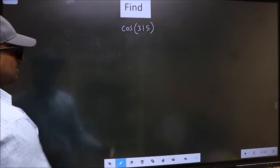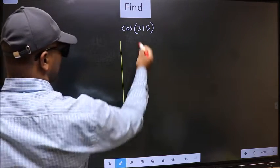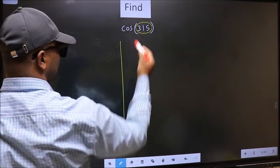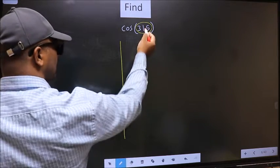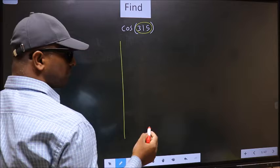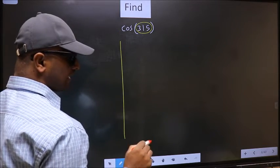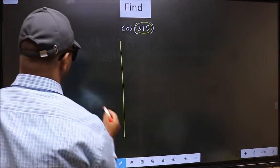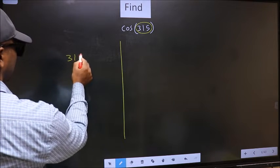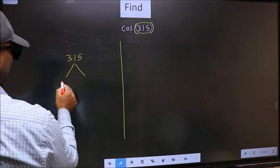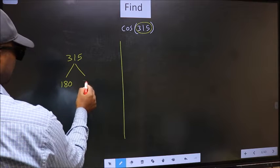Here we have 315. Now you should check which two multiples of 180 the angle 315 lies between. What I mean is 315 lies between 180 and 360.